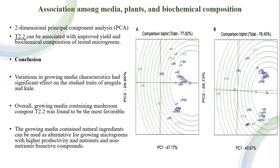The PCA results show that treatment 2.2, as you can see in the picture, has more stability and adaptability compared to other mixed growing media, and can be associated with improved yields and biochemical compounds. As a summary, different mixed growing media differentially altered the yield and quality in kale and arugula, and overall treatment 2.2 was the most effective growing media for these microgreen plant species.